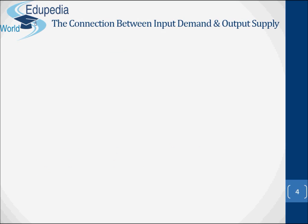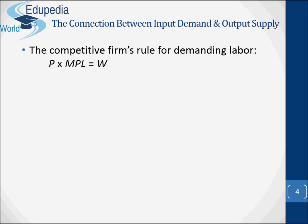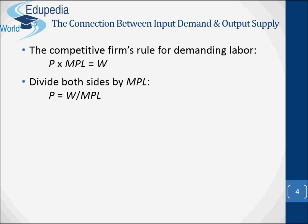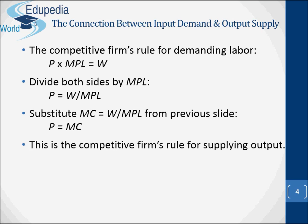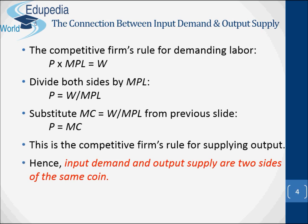When a competitive firm hires labour to the point where W equals VMPL, it is also producing output up to the point where the price equals the marginal cost. This is the competitive firm's rule for supplying output. Hence, input demand and output supply are two sides of the same coin.